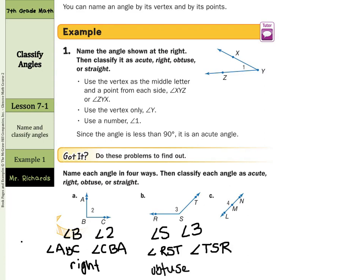Angle C is a straight angle. The vertex is M, so we can call it angle M, angle 4, angle LMN, or angle NML. Again, notice how the vertex always goes in the middle.